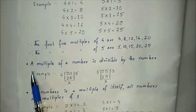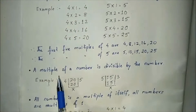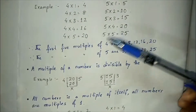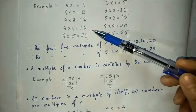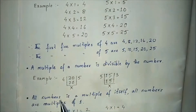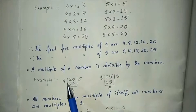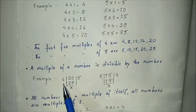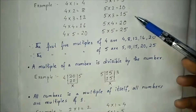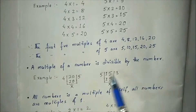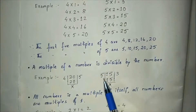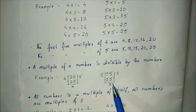The next point is: a multiple of a number is divisible by the number. Let us take any of the multiples from here. Let us take 20. Now 20 is divisible by the number itself — 4×5 is 20, so it is divisible. Now let us take 15. 15 is also divisible by the number itself — 5×3 is 15.